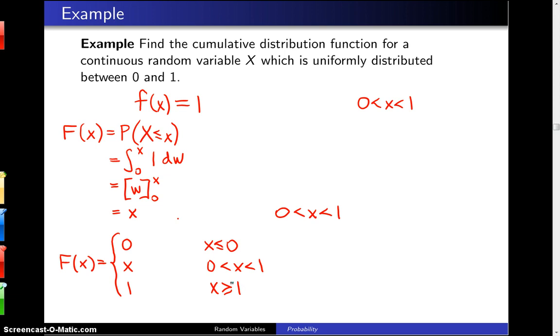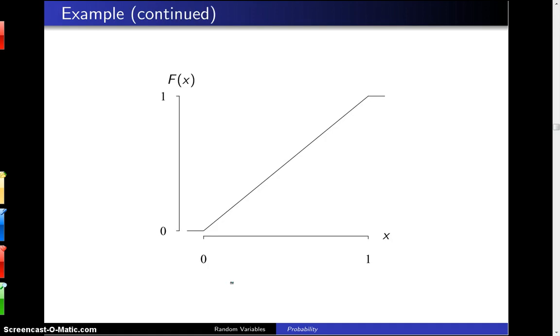On the next page is a graph of that cumulative distribution function. Here is capital F of x, which is the probability that the random variable x is less than or equal to little x. And notice it is 0 for x values between negative infinity and 0. And then it is x between 0 and 1. And finally it is 1 for x values greater than 1.